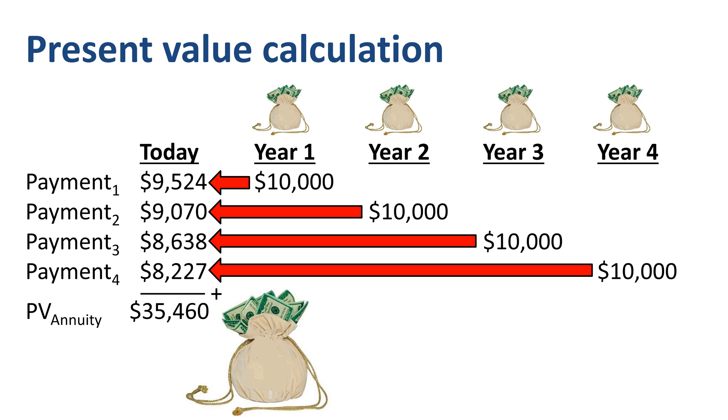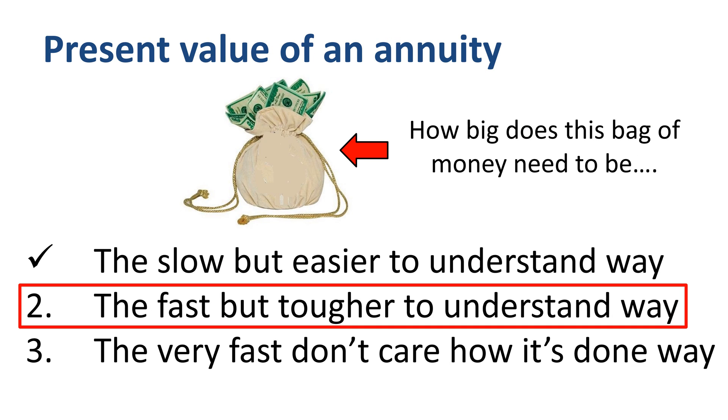The formula on the right summarizes the calculation. Now this calculation method of the present value of an annuity is doable for four payments, but it is a lot of work if you extend to 10, 20, or 30 years. That's why it's good to know that there is a shortcut to the present value of an annuity calculation that can easily handle any number of periods for the recurring payments, the fast, but tougher to understand way.